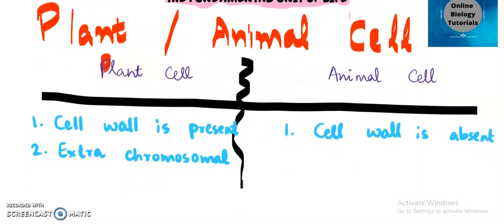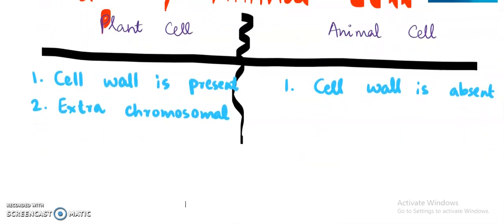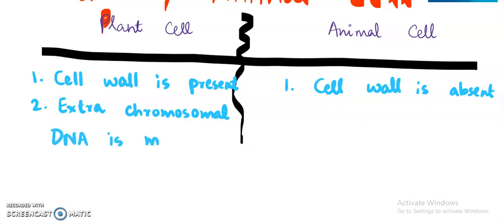Chromosomes are generally found in the nucleus. But other than the chromosomes if DNA is being found in a cell it is extra chromosomal. Extra chromosomal DNA is more.